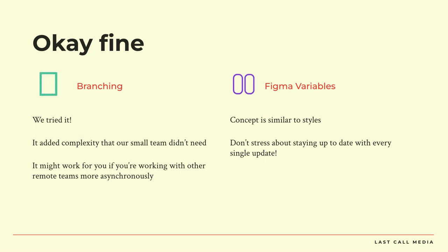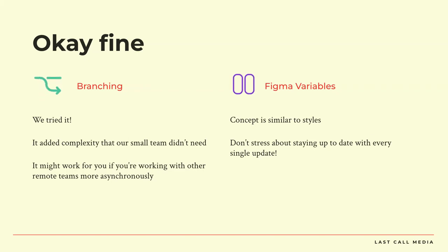Variables — I've used styles kind of interchangeably with variables throughout so far. I try not to stress about staying up to date with every single thing in technology. Figma is the third design software I've learned in my career. The soft skills of adapting and understanding the building blocks are a lot more important. I was there when they announced variables and I still haven't changed any of our stuff over — but I've tried one. It's cool. It's definitely bringing us closer and closer to development, so I do appreciate that.